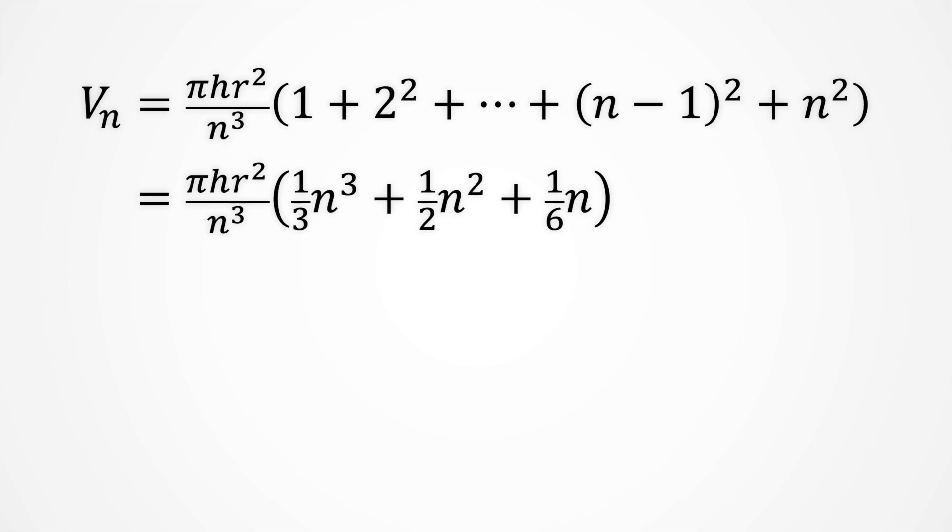Ok, let's finish our job. Recall the expression for the nth approximation of the cone's volume. Remember, dividing by n cubed, multiplying by the sum till n squared. Substitute the sum for the polynomial we found. And divide by n cubed. Now, it's time to take the limit as n goes to infinity, according to our approach.